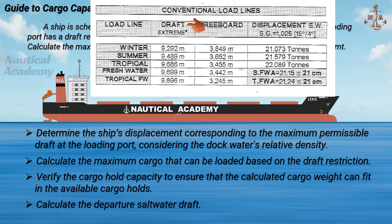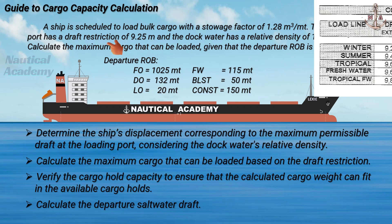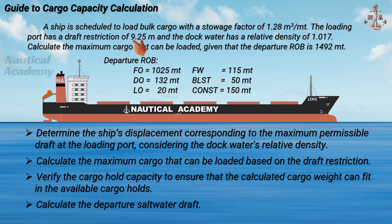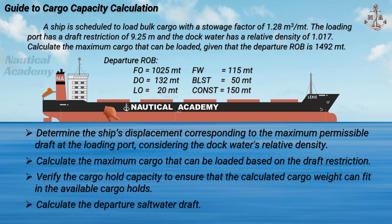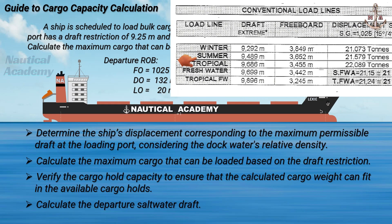The ship's maximum permissible draft when sailing in the summer zone is 9.489 meters, and 9.292 meters in the winter zone. These permissible drafts are based on the vessel floating in saltwater. Now the draft limit at the loading port is 9.25 meters, and the vessel is floating in dock water with a lower relative density. This means that if our ship were floating in saltwater, her draft would be less than 9.25 meters for the same displacement. Therefore, if the ship is sailing from the summer zone to winter zone or vice versa, the load line zone limits are not the primary concern in this scenario.